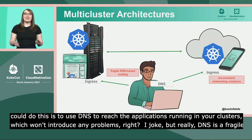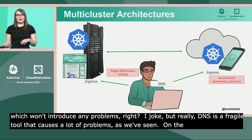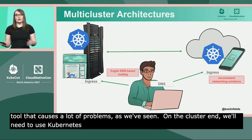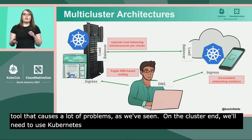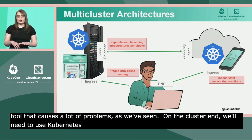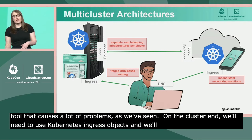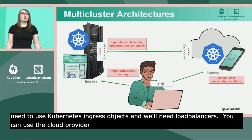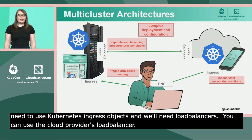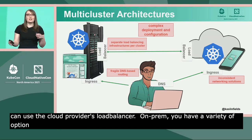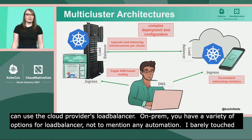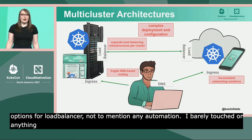On the cluster end, we'll need to use Kubernetes ingress objects to manage traffic coming into our apps, though the networking details of how we reach those clusters and apps will vary per environment. We're also going to need some load balancers — in the cloud you can use the cloud provider's load balancer or make your own, and on-prem you have a variety of options. Not to mention any automation you'd want to write, and I barely touched on anything you'd need to know about Kubernetes ingress itself. All this is getting pretty complicated.